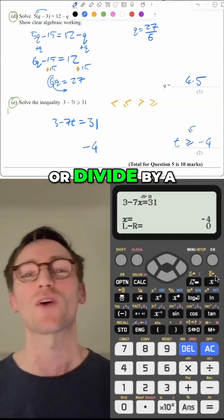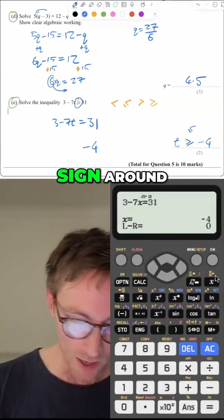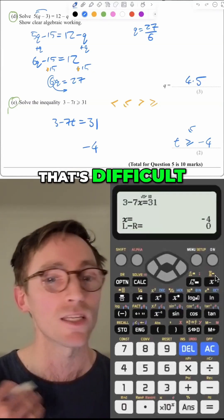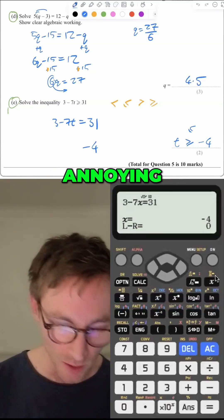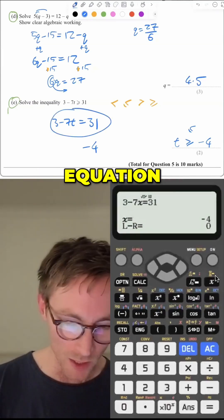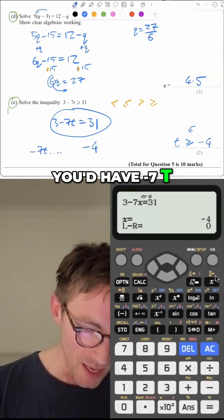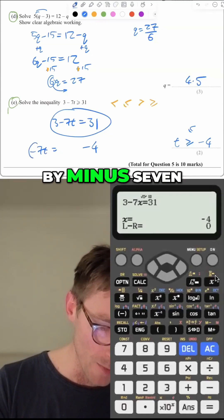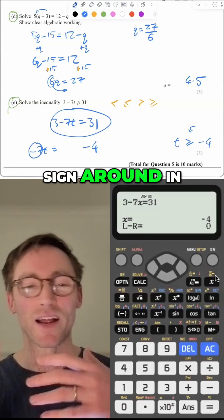I'll just tell you quickly. If you ever times or divide by a negative number, it flips the sign around. But that is hard. That's difficult to remember. It's tricky and annoying. So when you actually came to solving this equation, at some point you'd have minus 7t equals, and then you divide by minus 7, and it spins the sign around in the middle.